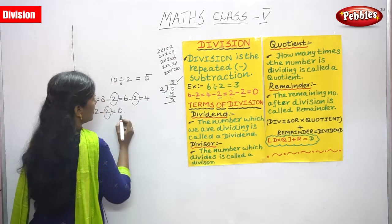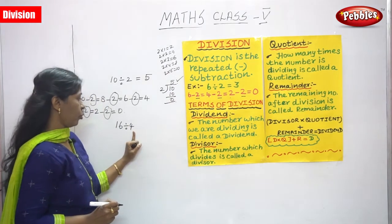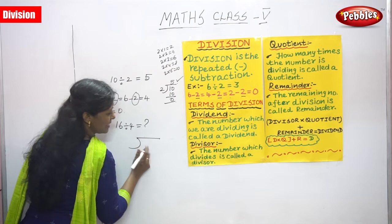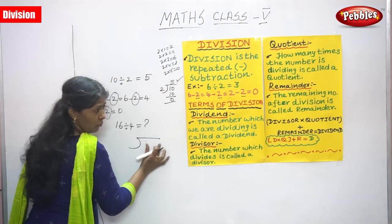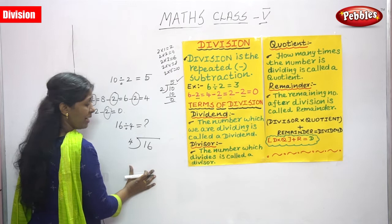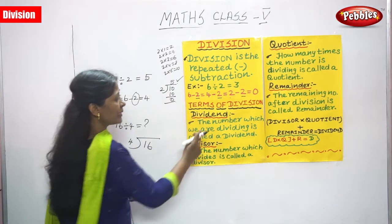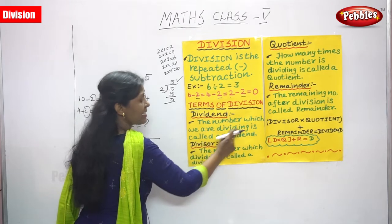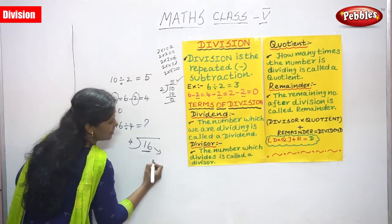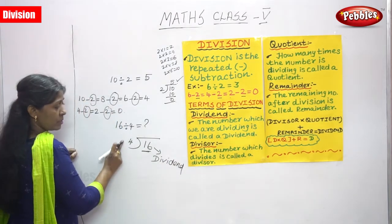For example, 16 divided by 4. This is the symbol and pattern of division. In this case, the first term is dividend — the number which we are dividing is called a dividend. So 16 is the dividend (D-I-V-I-D-E-N-D). The number 4 is called the divisor (D-I-V-I-S-O-R) — the number which divides is called a divisor. So 4 is the divisor and 16 is the dividend.